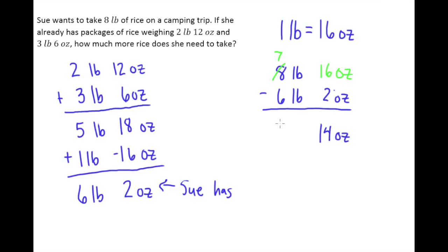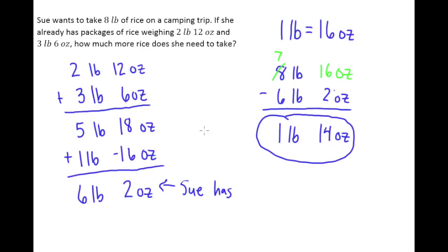And 7 minus 6 is 1, so we have one pound 14 ounces as our final answer — she still needs to pack an additional one pound 14 ounces. Notice we used the fact that one pound equals 16 ounces twice: once to simplify how much Sue has into the fewest ounces possible, and again to borrow from pounds to create more ounces so we could subtract.